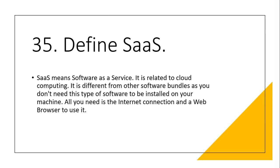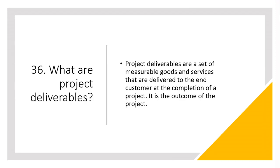Question 35: Define SaaS. SaaS means Software as a Service. It is related to cloud computing. It is different from other software bundles as you don't need this type of software to be installed on your machine — all you need is an internet connection and a web browser to use it. Question 36: What are project deliverables? Project deliverables are a set of measurable goods and services delivered to the end customer at the completion of a project. It is the outcome of the project.